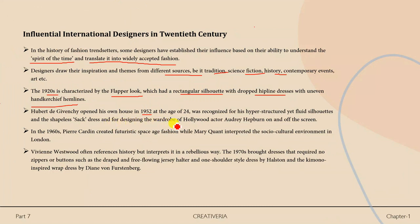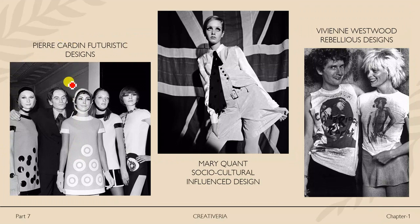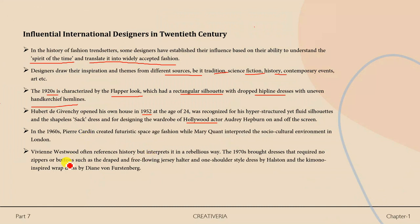In the 1960s, Cardin created futuristic space-age fashion. Mary Quant interpreted the socio-cultural environment in London, creating designs reflecting contemporary culture. Cardin's futuristic designs and Mary Quant's socio-culturally influenced designs are visible examples of how designers translate their environment into fashion.